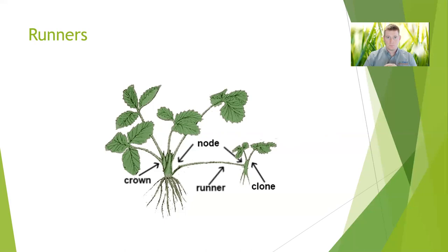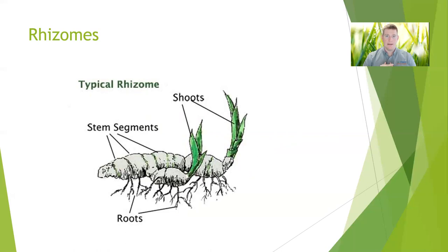Rhizomes are another form that plants will use to help spread and extend the range of where they're living within a localized area alongside seed production. It's important to remember that these plants are also using seeds to spread, not just through runners or rhizomes. When you think of rhizomes, think of irises. Even the aquatic irises we have use rhizomes to spread as well.